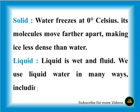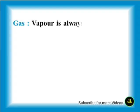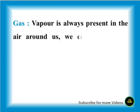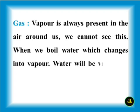Liquid water is wet and fluid; we use liquid water in many ways including washing and drinking. Gas or vapor is always present in the air around us, though we cannot see it. When we boil water it changes into vapor; water becomes vapor at 100 degrees Celsius.